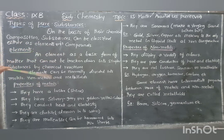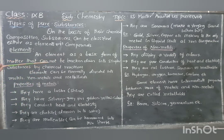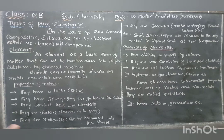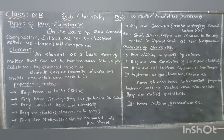The first one is elements. An element is a basic form of matter that cannot be broken down into simpler substances by chemical reactions or chemical changes. At the end of a chemical reaction, you cannot separate or break down the element further — it remains the same form of substance.